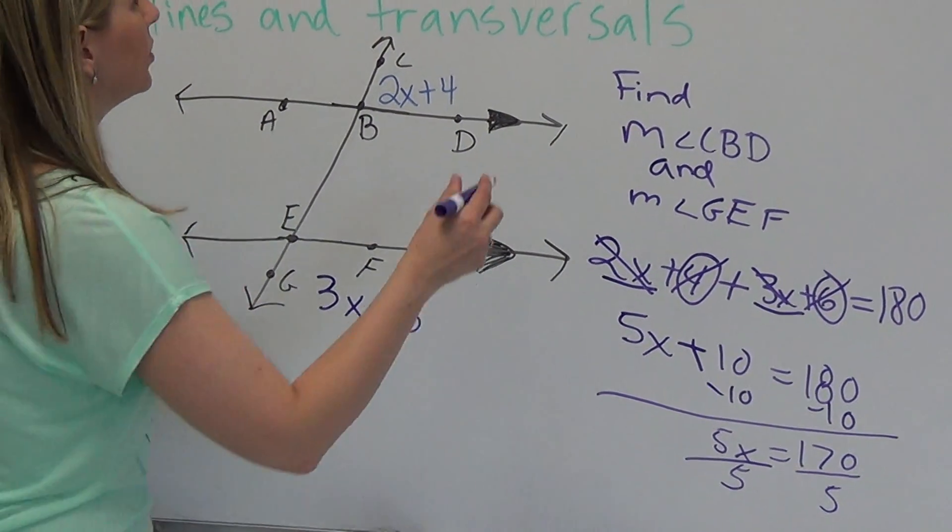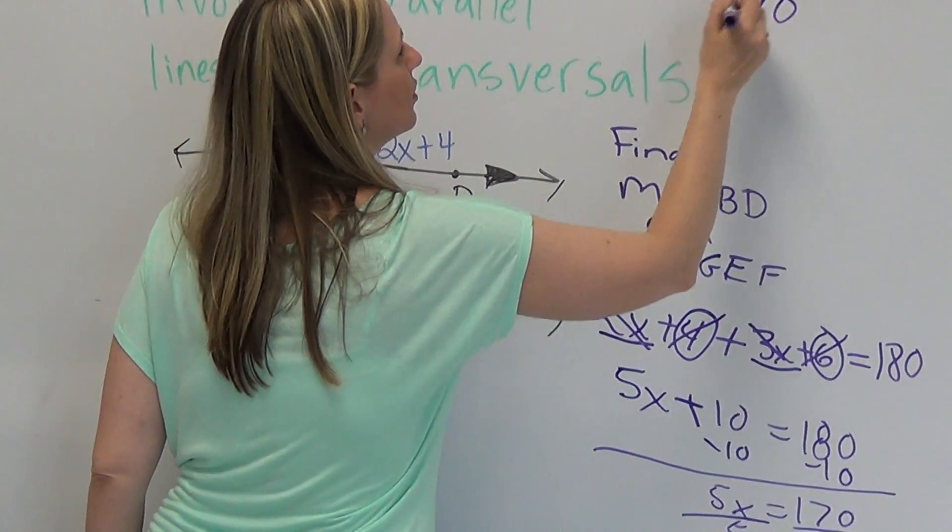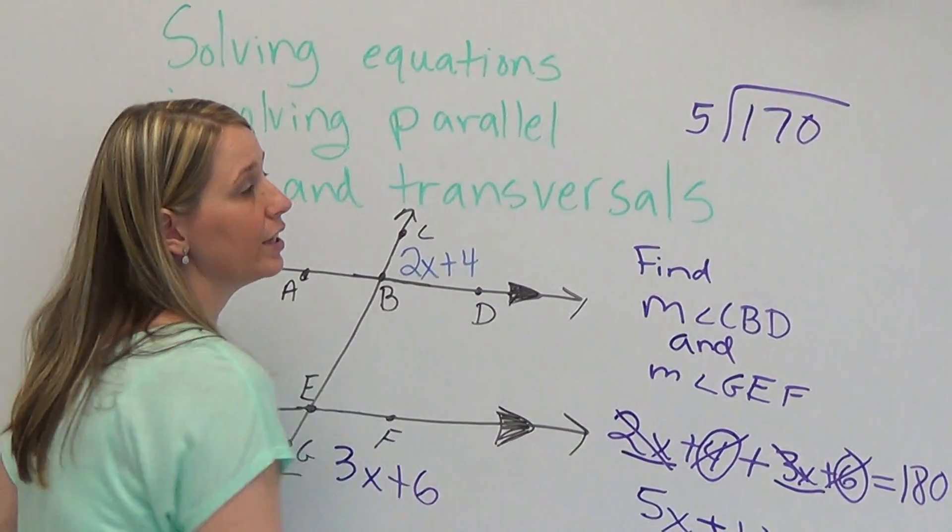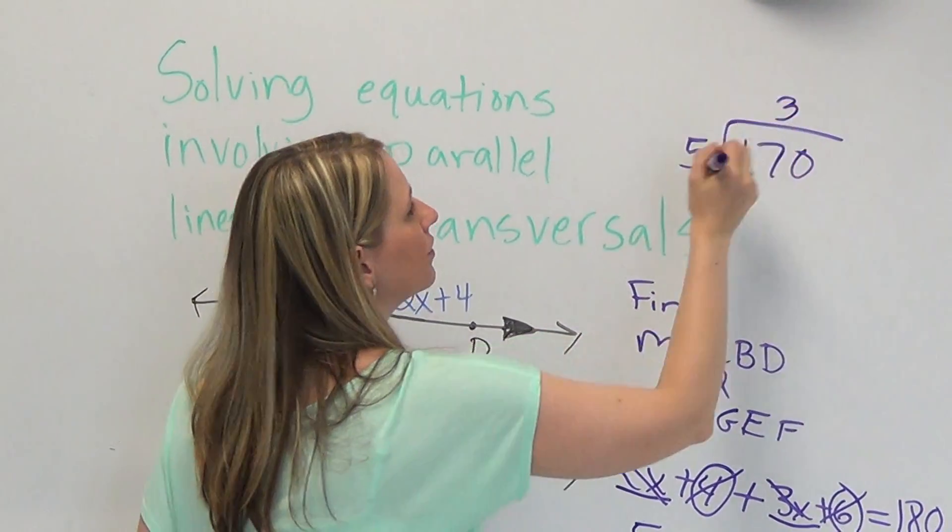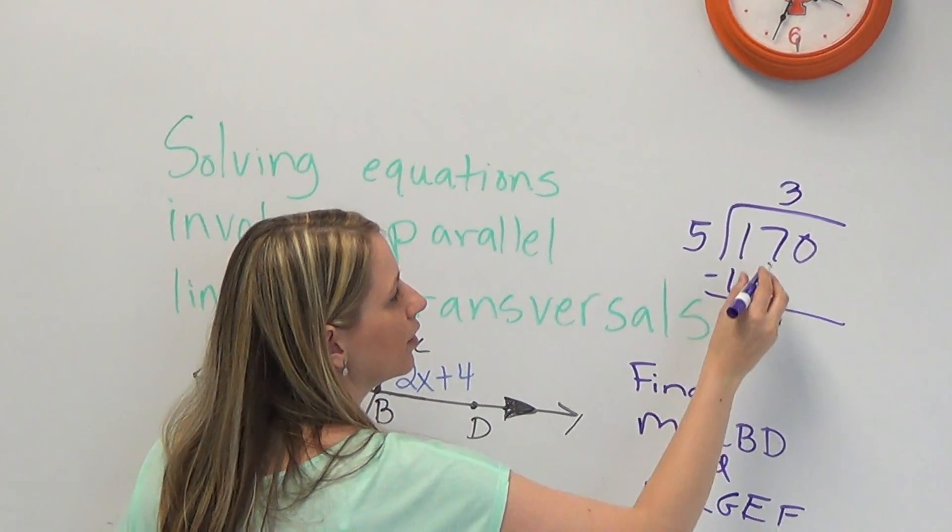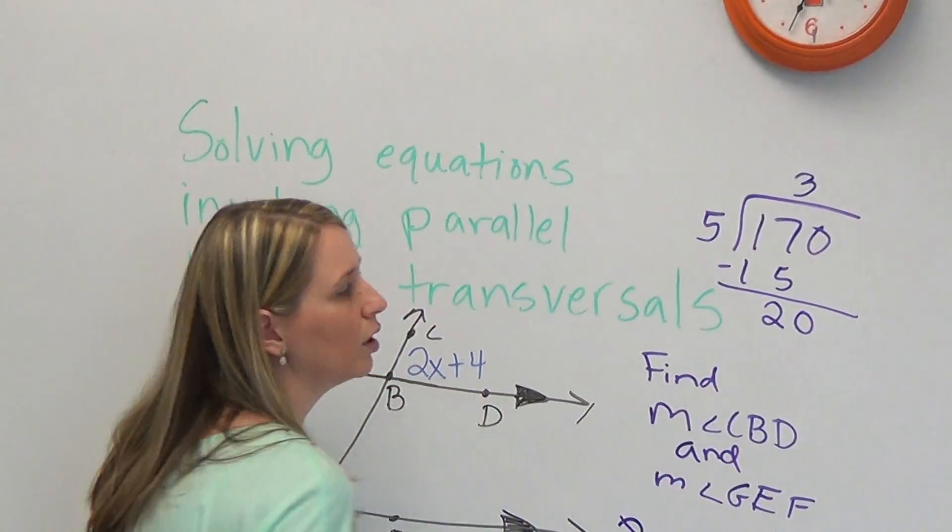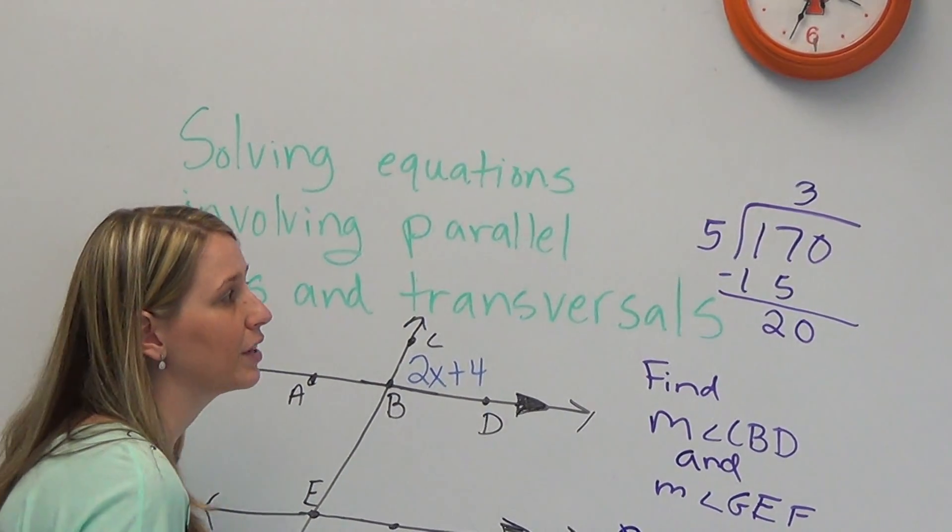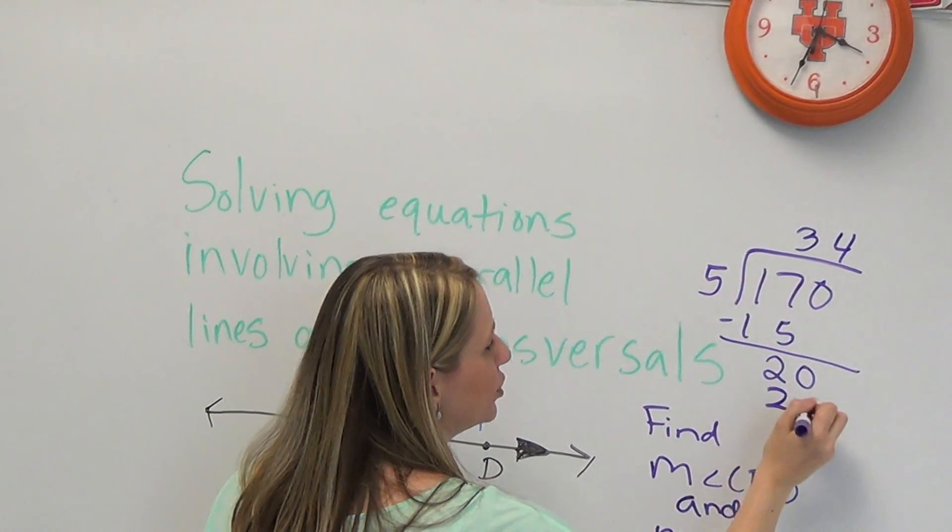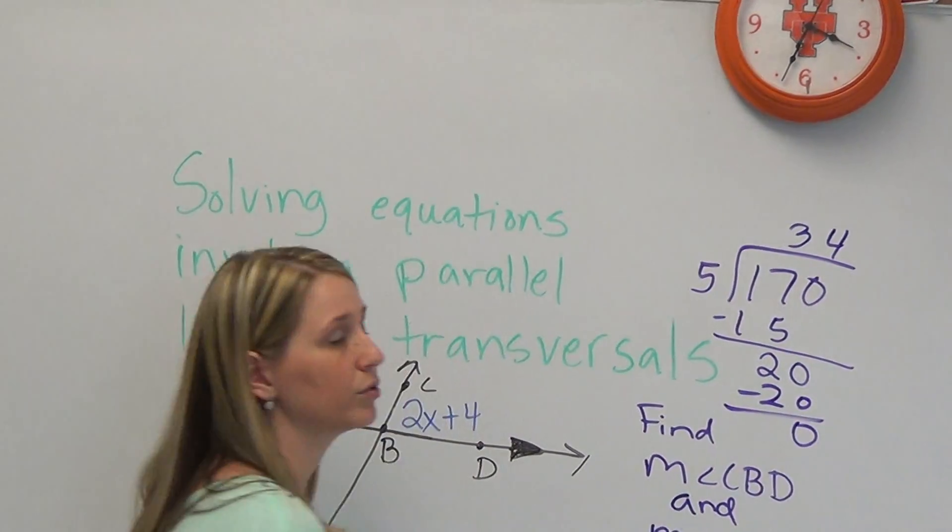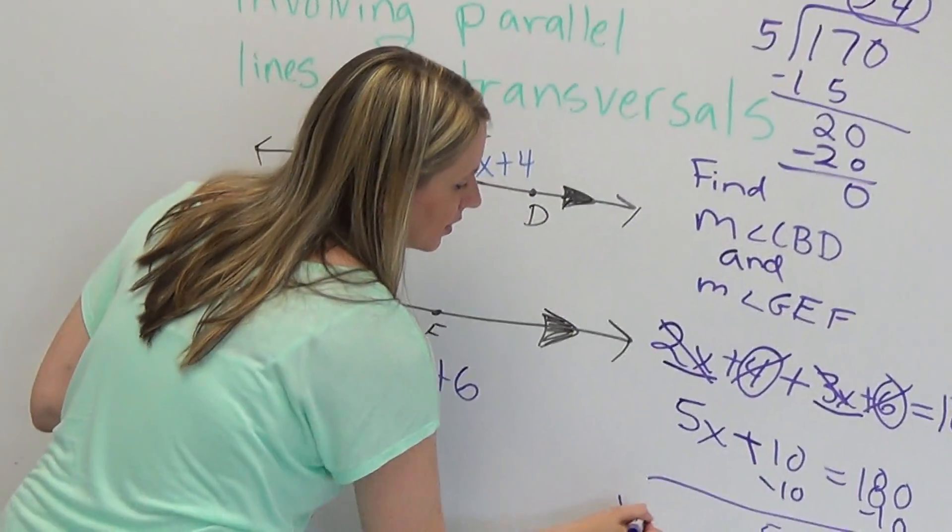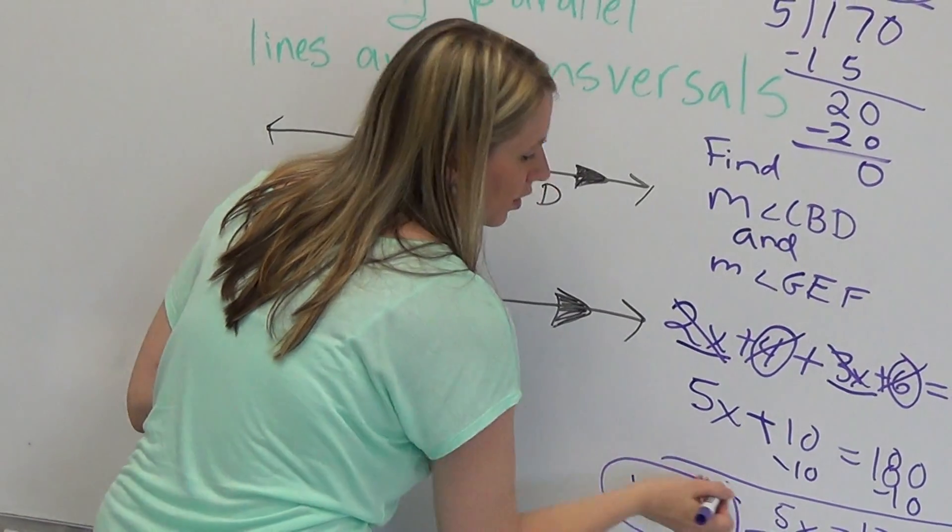I would usually use a calculator at this point, but we can do it using division. How many times does 5 go into 170? 5 goes into 17 three times. 5 times 3 is 15. I'll put 15 down here. Then I subtract. I get a 2. Bring down my 0. We find out how many times does 5 go into 20. 5 goes into 20 four times. 5 times 4 is 20. So we get 0, no remainder. So my answer is 34. So x is equal to 34.